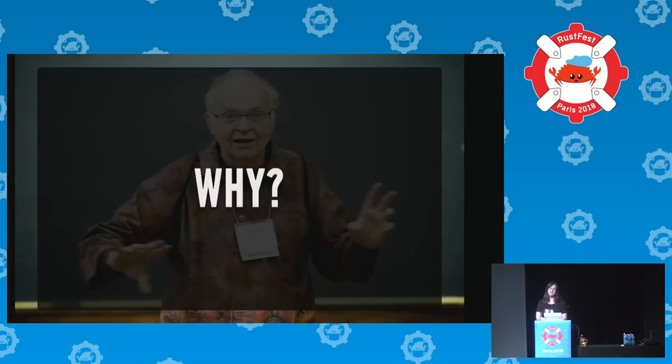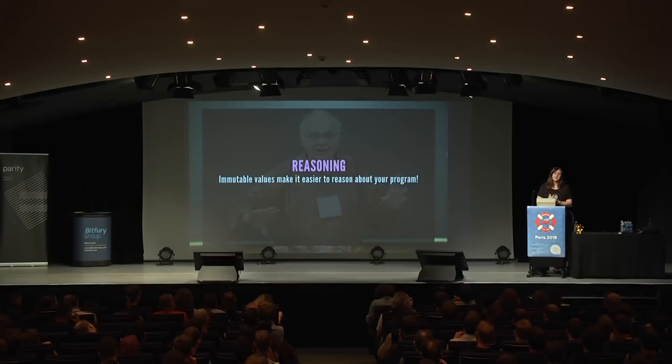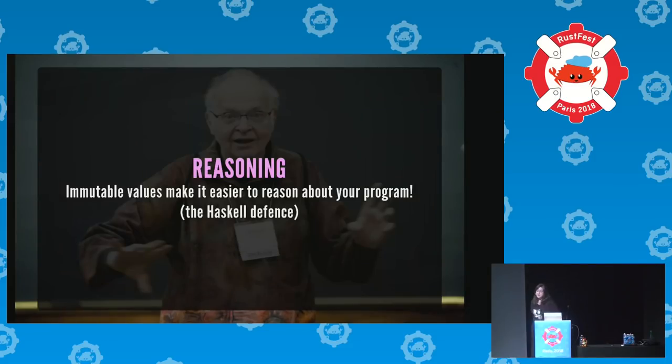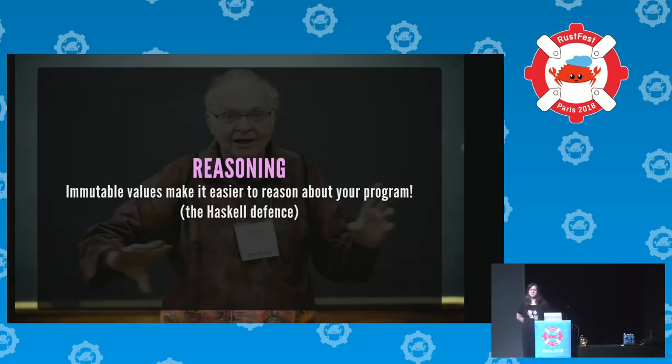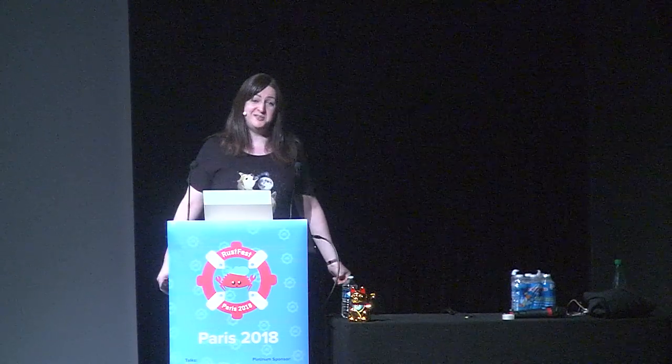Why do we even want these data structures? The classic argument — the Haskell defense — is that immutable values make it easier to reason about your program. In Haskell it's so easy they had to introduce monad transformers and profunctor optics just to make it hard again. But Rust can track how mutable data structures change, which almost eliminates that argument. Same with thread safety — if a value never changes you don't worry about another thread changing it, but Rust manages this too.